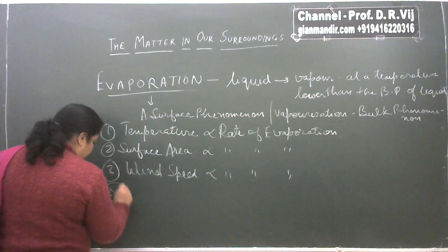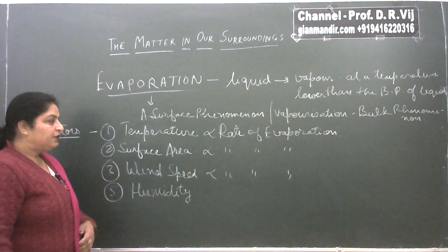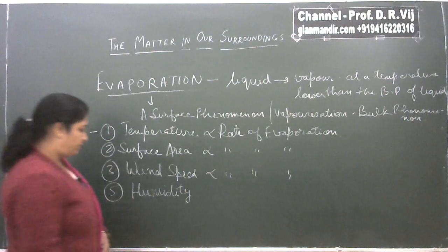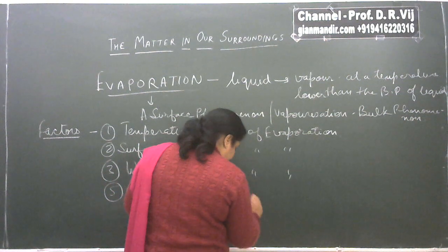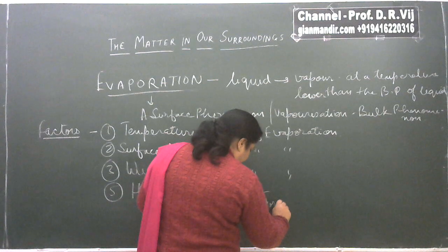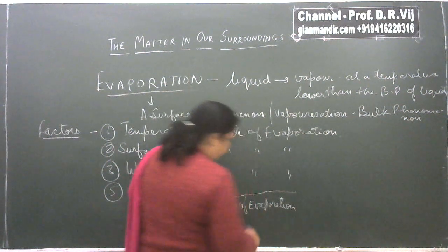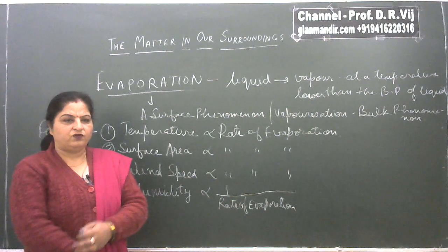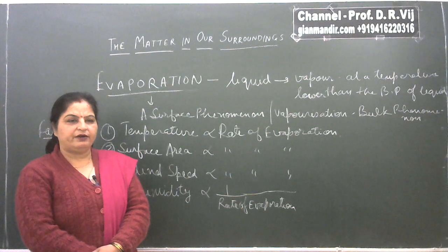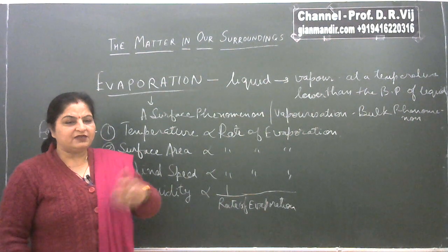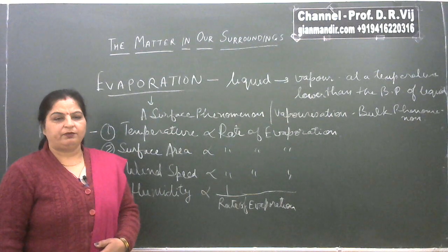Another factor that decides the rate of evaporation is humidity. Humidity adversely affects the rate of evaporation — humidity is inversely proportional to rate of evaporation. More is the humidity, less is the rate of evaporation. Humidity refers to the water content in the form of water vapors in the atmosphere. If the atmosphere is already saturated with water vapors, it will not extract more vapors from the liquid.